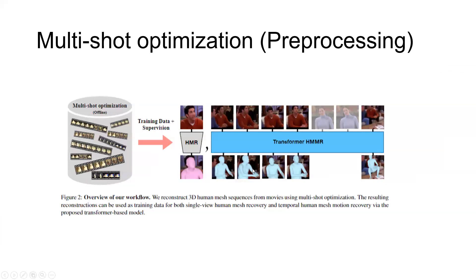One problem this optimization method needs to solve is that when you're taking a long sequence of scenes, there might be scenes where the person of interest is not available in a particular scene. For example, here we have Ross and Monica. Let's say Ross is the person of interest in this scenario, but in two of the scenes, Ross isn't available — only Monica is available. So we have to somehow specify in which scenes which character is available.